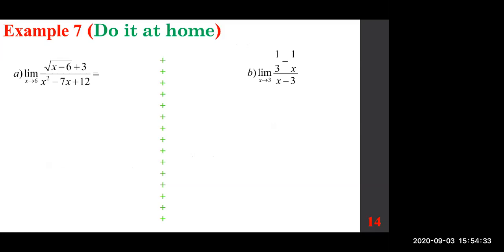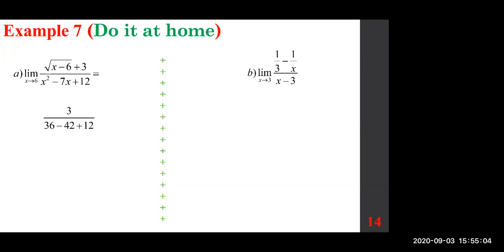We are taking the limit of the square root of x minus 6 plus 3, over x squared minus 7x plus 12. Remember the first step: plug in x equals 6. When you plug in, 6 minus 6 is zero, square root of zero is zero, so the numerator is 3. The bottom is 6 squared which is 36, minus 7 times 6 which is 42, plus 12, giving 6. Do the math — you end up with the answer 3 over 6. You just plug in and it works out.